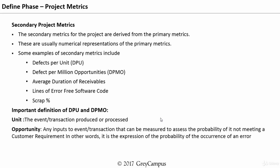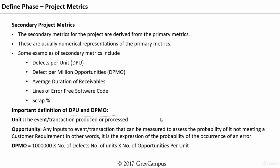We need to understand some important concepts and definitions of DPU and DPMO. The unit is the event or transaction produced or processed. For example, assume that on a particular day, a hundred insurance policies are being processed in an insurance company. The number of units produced, we call it U, so U is equal to 100. This hundred represents the total events or transactions produced or processed.